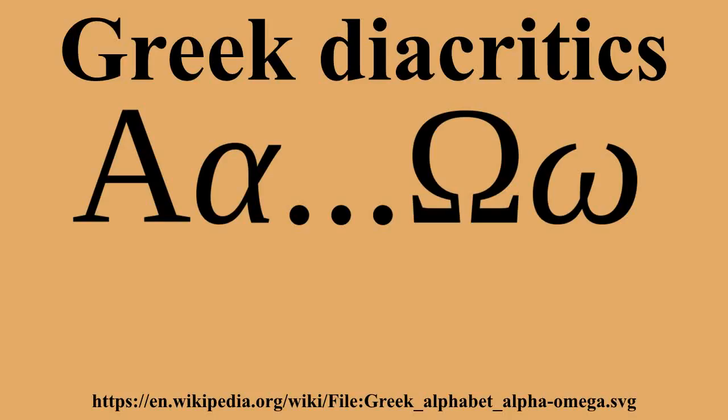The breathings were written over a vowel or rho. The rough breathing indicates a voiceless glottal fricative before the vowel in ancient Greek, known in Greek grammar as aspiration. This is different from aspiration in phonetics, which applies to consonants, not vowels. Rho at the beginning of a word always takes rough breathing, probably marking unvoiced pronunciation. In Latin, this was transcribed as rh.